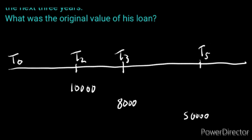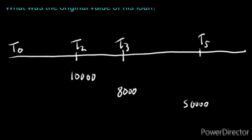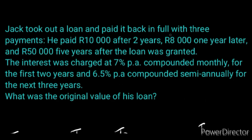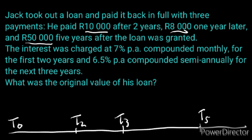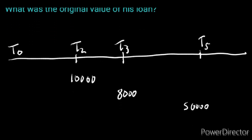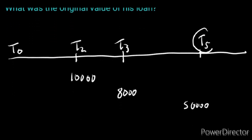At T2 we put $10,000. At T3 we put $8,000 on a separate line. At T5 we put $50,000 — this is the final payment. The question said he paid it back in full with three payments, so T5 is the end. The interest changes at T2, so we draw dotted lines at T2.